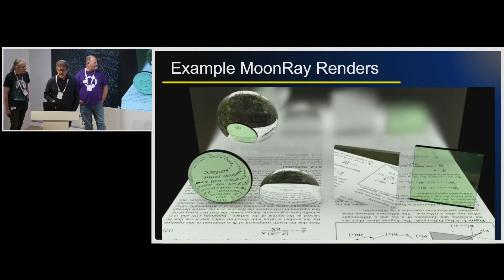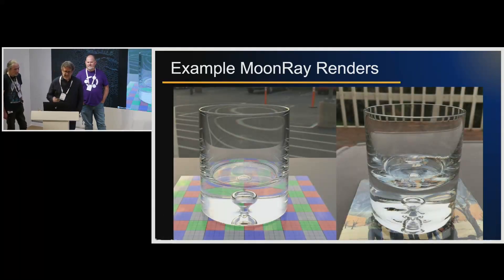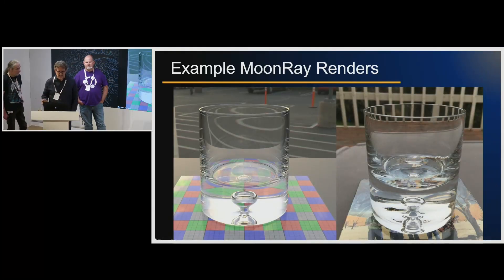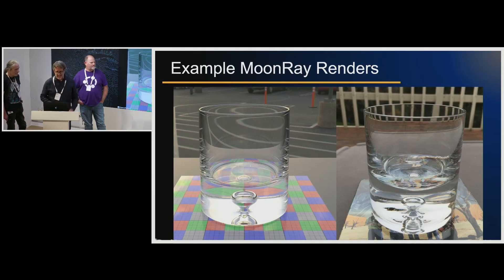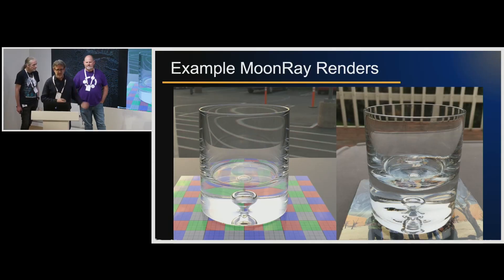Moonray can render images that are photo-real. This is a render — the glass on the left is rendered, the one on the right is real. I wanted to show these examples to contrast with all the other images you've seen and will see in this presentation, which are also renders from Moonray but from our films, and thus are highly stylized. The reason I wanted to contrast that is because I have been asked: can Moonray do photo-real? Yes, it most certainly can.